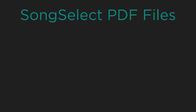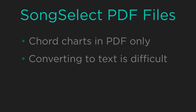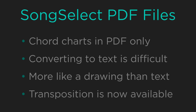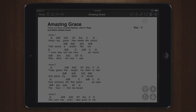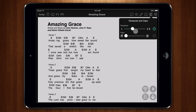SongSelect makes chord charts available only in PDF format. It is also difficult to convert these files to text because they are more like a picture of a chord chart than text. However, you can now transpose SongSelect songs right inside of OnSong. Tap on the sliders icon to open the Transpose and Capo menu. Slide the Transpose slider to the key you want. You can also set a capo to derive the final key.